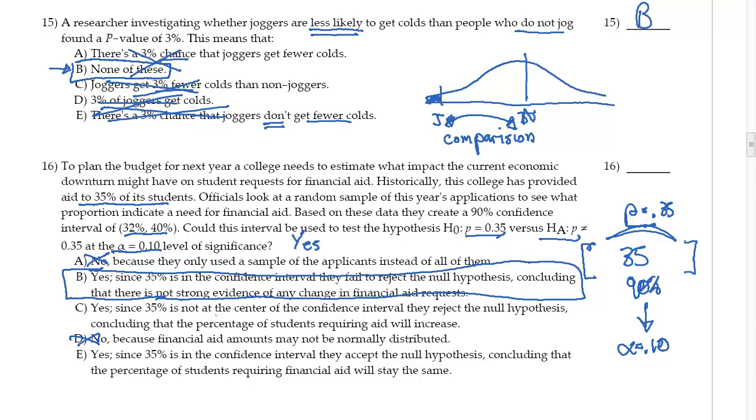Yes, since 35% is not at the center they reject the null hypothesis—no, 35% doesn't have to be at the center, just has to be in it. And yes, since 35% is in the confidence interval they will accept the null hypothesis—oh, 'accept' is bad.